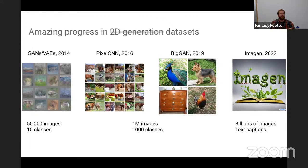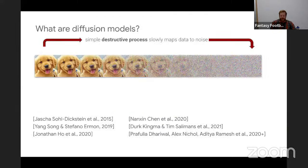Text captions give you amazing creative control over what you can generate. If I have a thousand ImageNet classes, I can create a thousand different things with some expert tuning. But if I have text, then anyone can plug in and try out these systems. I want to spend a bit of time going through what diffusion models are, because it's going to be key to how we use them for 3D generation later.